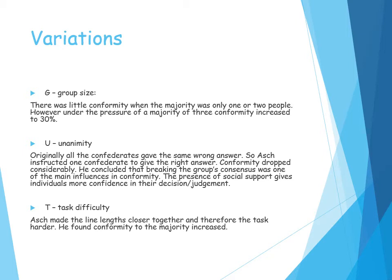Task difficulty: when Asch made the line lengths closer together and the task more difficult, he found that conformity rates increased. This suggests that informational social influence is happening there, because it was harder to distinguish and participants were looking to others for the correct answer.